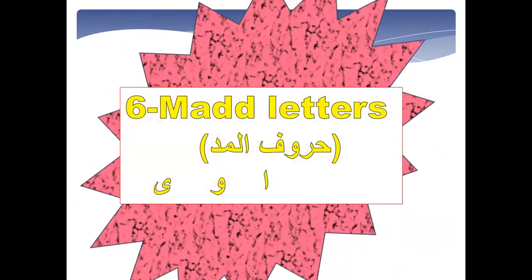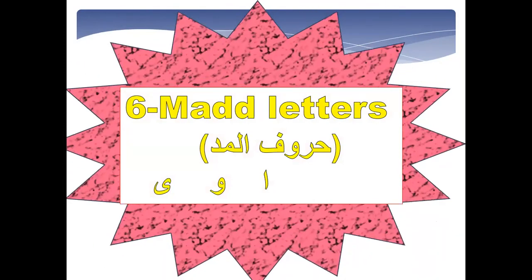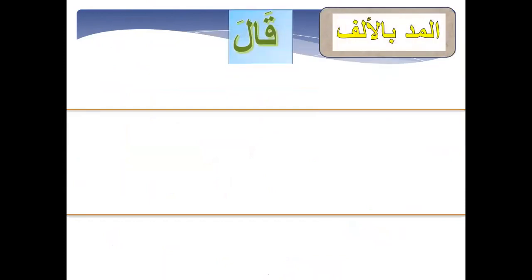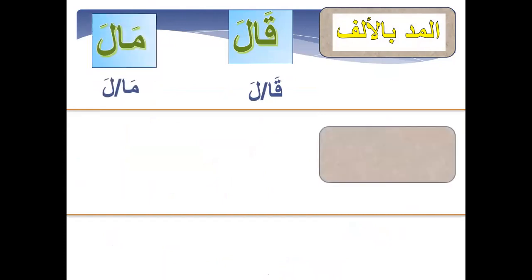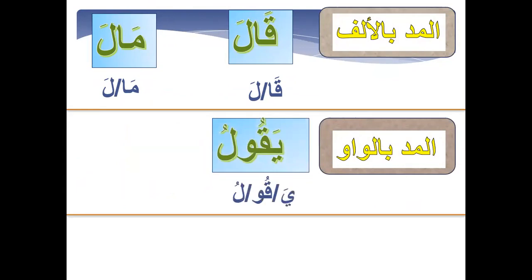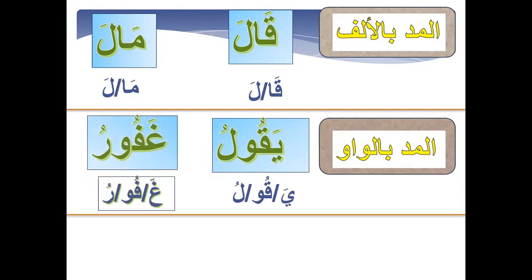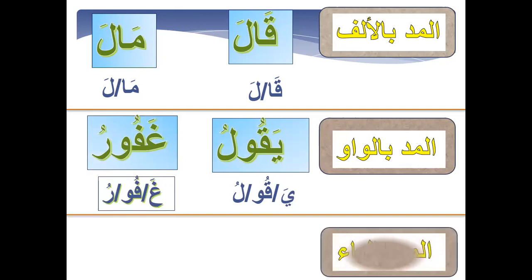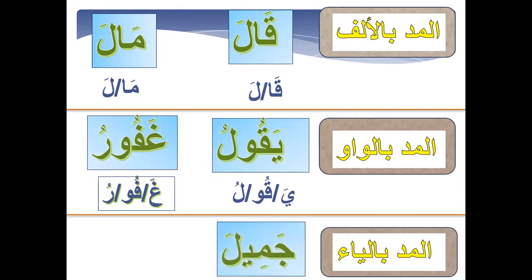Number six is mad letters — huruf al-mad: alif, waw, and ya. For example, the word 'qala' — qa-la — two syllables. Another example with waw: 'yaqulu' — ya-qu-lu — three syllables. With ya: 'ghafiru' — gha-fi-ru. Another mad ya example: 'jameela' — ja-mee-la.